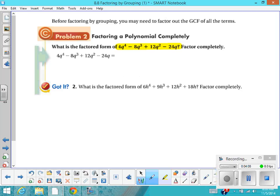Do you see what's common between all four of these terms? The GCF in this case is 4q. And I'm going to make that times the quantity of q³ - 2q² + 3q - 6.